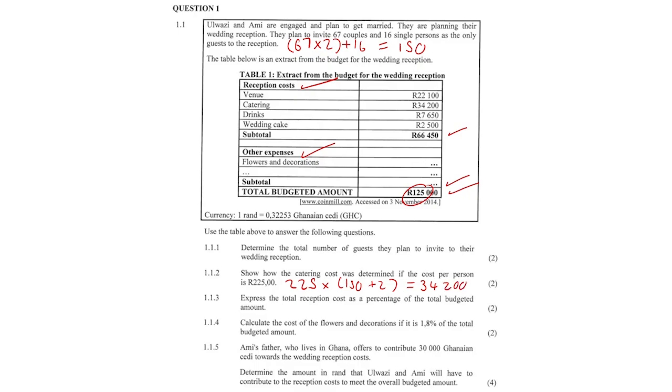Question 1.1.3: Express the total reception cost as a percentage of the total budgeted amount. The reception cost is going to be 66,450 over the total cost being 125,000. So 66,450 over 125,000, and we want that as a percentage so we multiply it by 100. Always round to two decimal places and we get 53.16%.